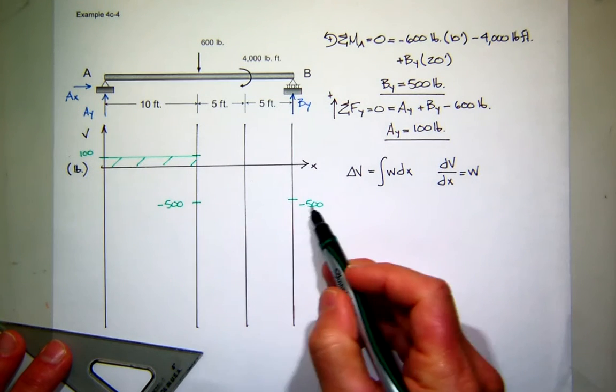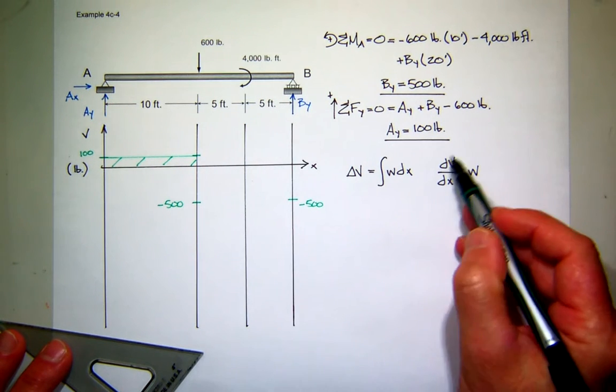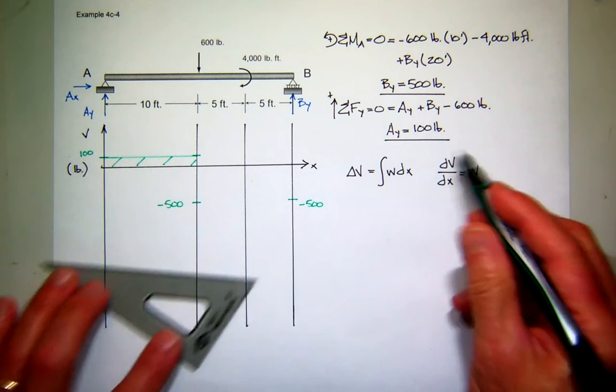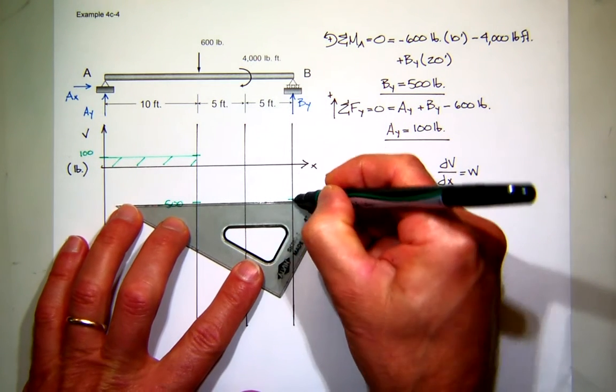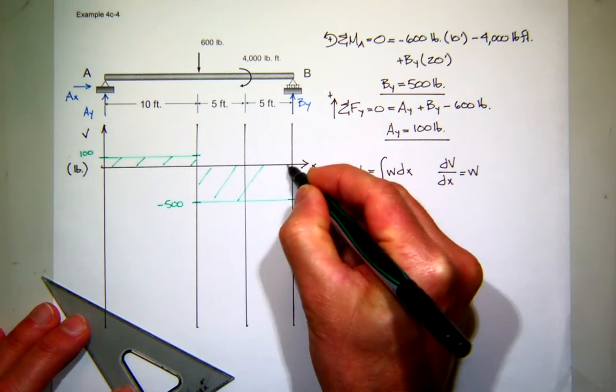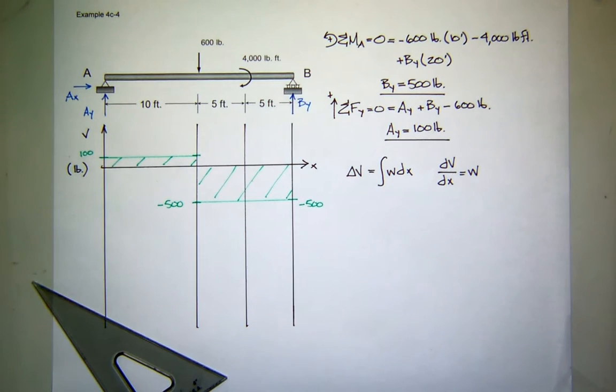So that should be comforting. And then finally, the shape of the curve in between is given by this relationship, which says what? The slope is equal to the load. The load is zero. Zero slope is a horizontal line. And really not a bad shear diagram. Pretty easy to deal with.